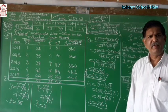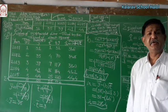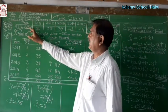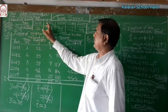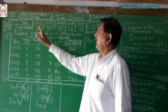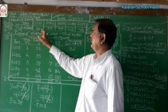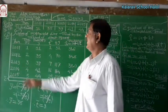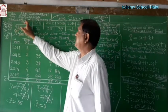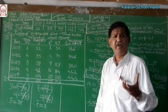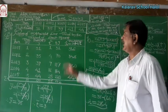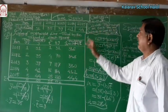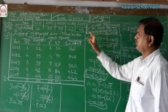Method of least squares for fitting a straight line trend. This is the given data — year and profit in lakhs of rupees: 2011, 2012, 2013, 2014, and 2015, with profits of 31, 35, 39, 41, and 44. Fit by the method of least squares, obtain the straight line trend, calculate the trend values for each year, and estimate the trend for the year 2017.